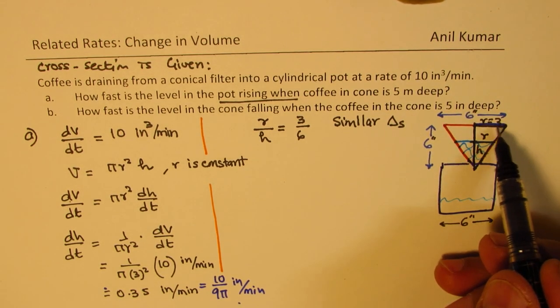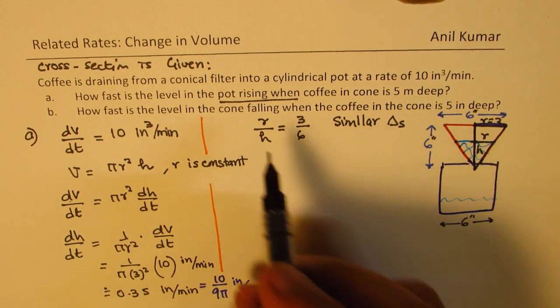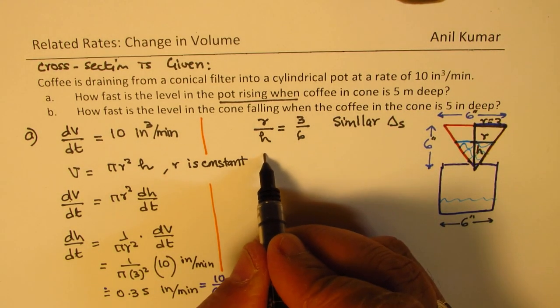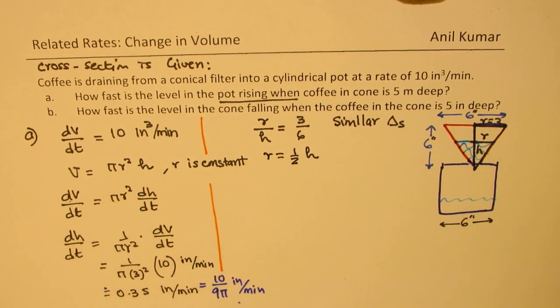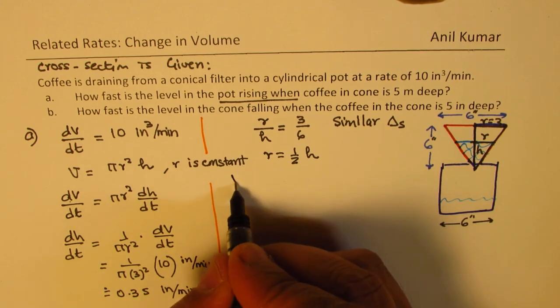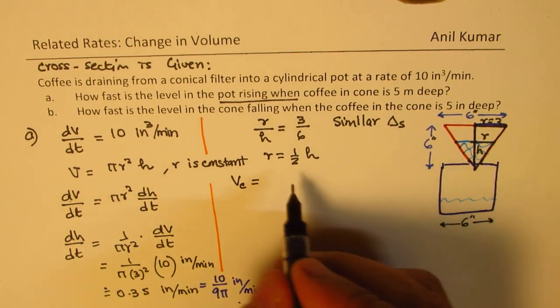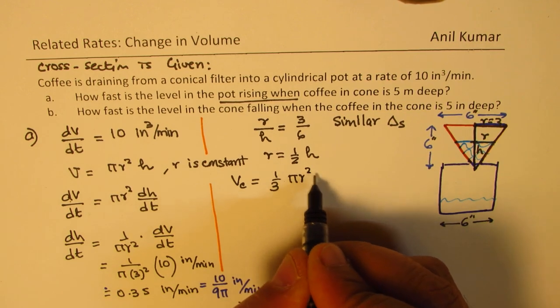Big triangle, radius is 3 and this is 6 and here r and h. So from here we can write that r is equal to half of h. So we have a relation r is half of h.